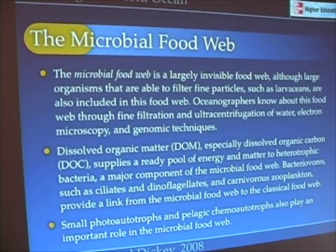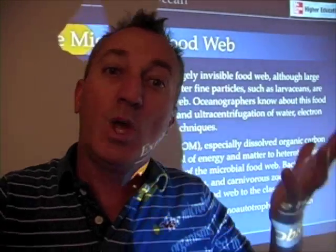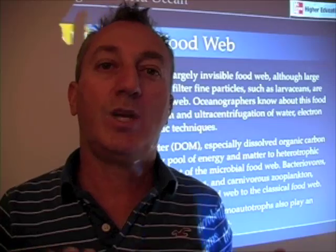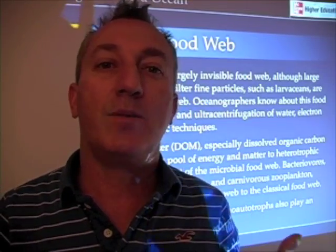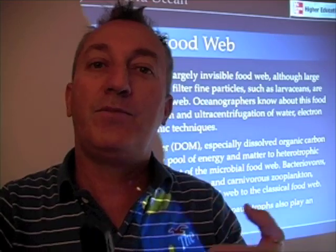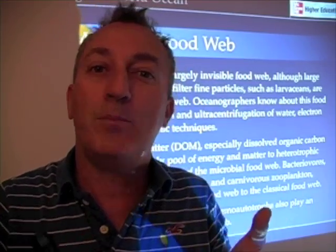In contrast, the microbial food web is really kind of an invisible food web. Even though we can see some of the organisms, and some large organisms are included in this food web, we really didn't know about this food web until we began to look at the very tiny things that live in the ocean — until we developed ultrafiltration techniques, applied electron microscope techniques, and began to analyze genomic material and compare different DNA and RNA sequences in the ocean, until we really had that molecular look.